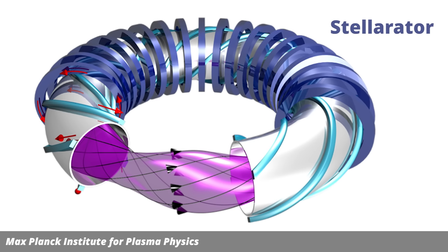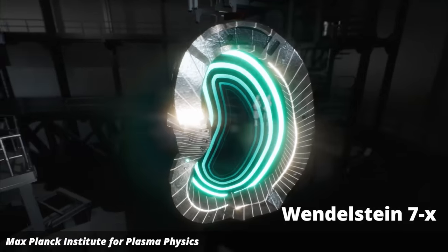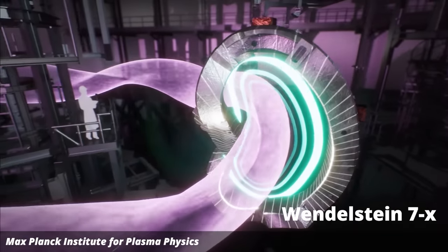A stellarator is still a donut shape, but it has a more complicated magnetic field that allows the device to be smaller and should also make it harder for the plasma to escape, thereby increasing efficiency. The biggest existing one is Wendelstein 7X in Greifswald, Germany.